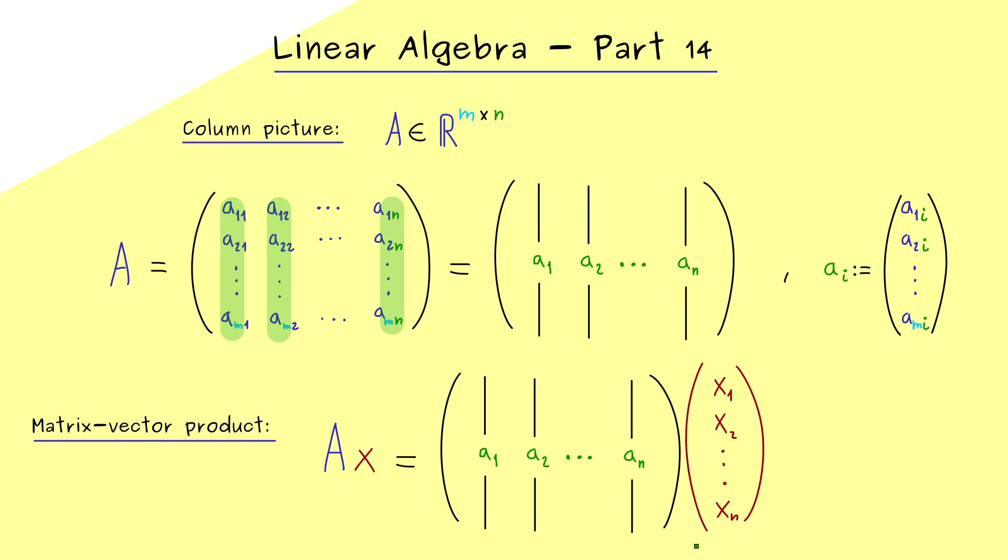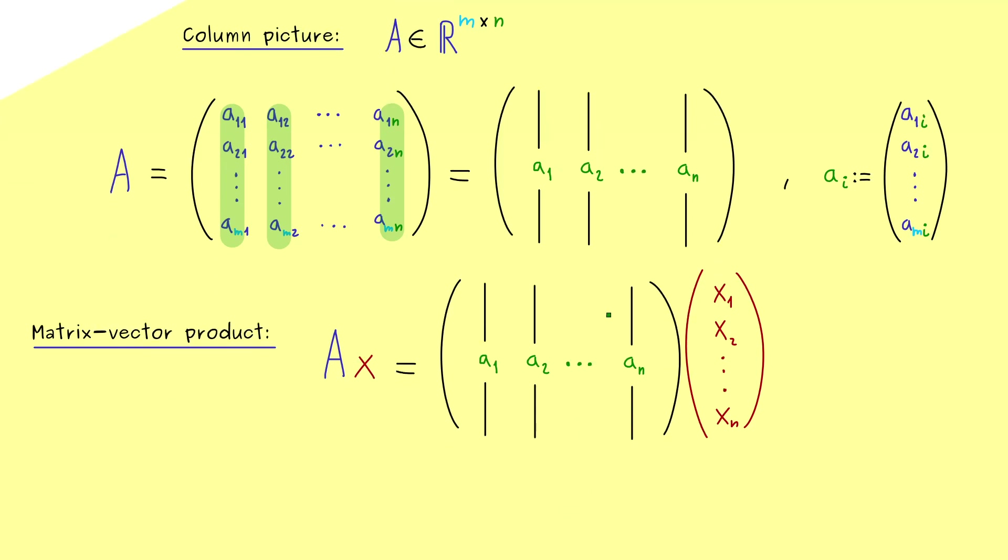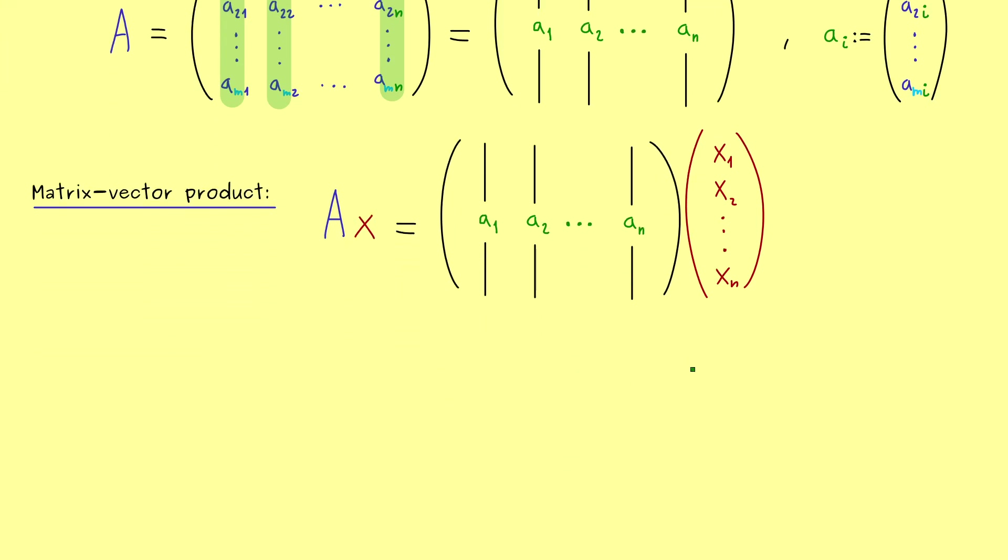And now, when you recall how we defined this matrix vector product, you see, we can use the columns here. More precisely, we can write it as the multiplication x1 with the first column, plus the multiplication x2 with the column A2, plus the next combination and the next combination, until we reach the end, xn times the nth column, An.